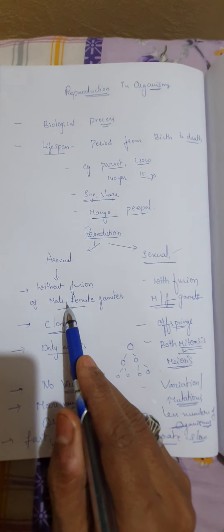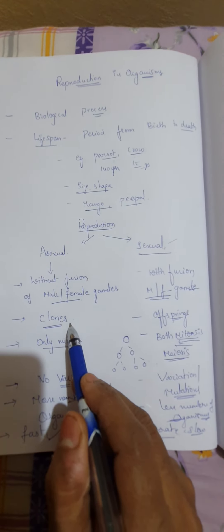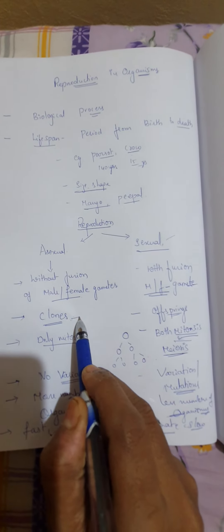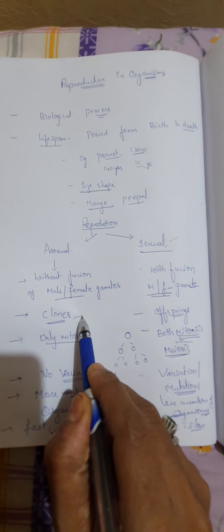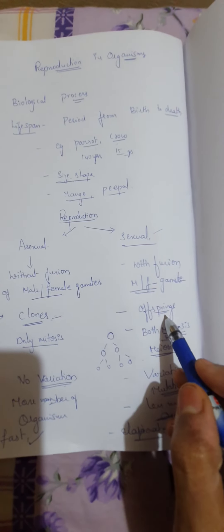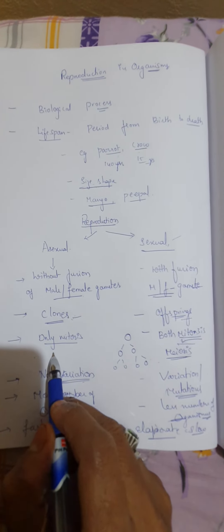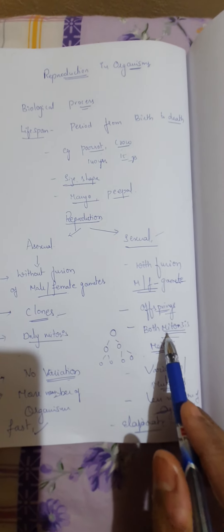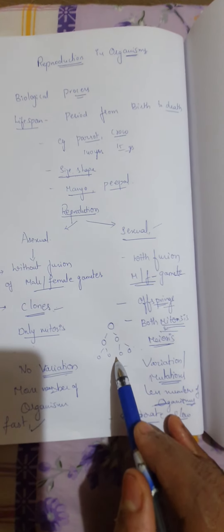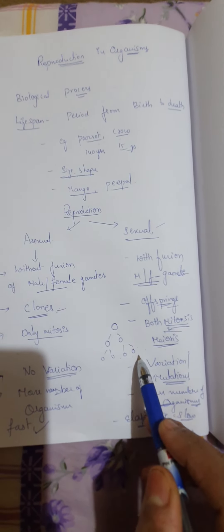Here, the organism which is formed, we call it as clones because it is morphologically and genetically similar. But here we call them as offspring. And here only mitosis process is involved. Here, both mitosis and meiosis process involve where four haploid cells are forming.